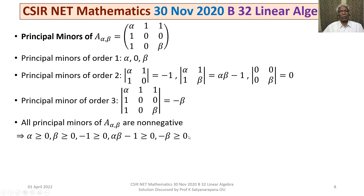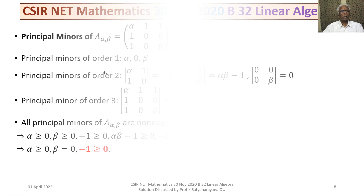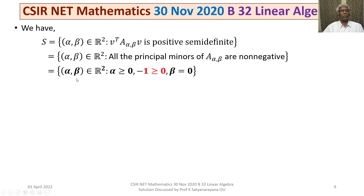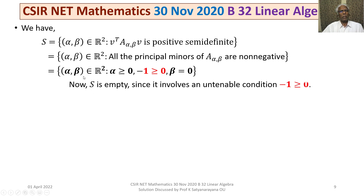For all principal minors to be non-negative, we need: α ≥ 0, β ≥ 0, −1 ≥ 0, αβ − 1 ≥ 0, and −β ≥ 0. From β ≥ 0 and −β ≥ 0, we get β = 0. This forces the condition −1 ≥ 0, which is impossible. Therefore S is the set of (α, β) satisfying these conditions including the untenable condition −1 ≥ 0, so S is empty. The answer is Option 1: S is empty.